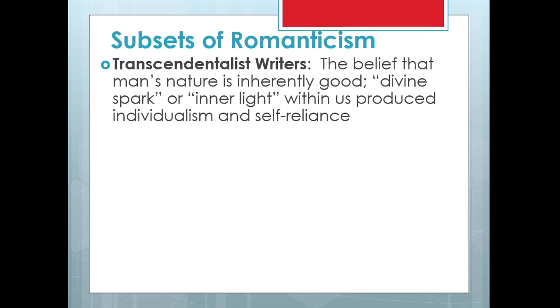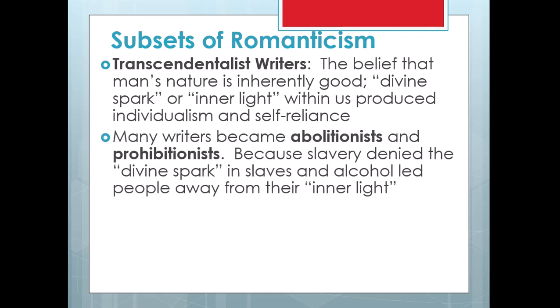The subsets of Romanticism: Transcendentalist writers have a belief that man's nature is inherently good, that all people have within them a divine spark or an inner light that produces individualism, and therefore we should be self-reliant. Many of these writers became abolitionists and prohibitionists because slavery denied the divine spark in slaves. They said these are people, many of whom have become people of faith, who taught themselves how to write, who've written slave narratives describing their experiences and their quest for freedom — and slavery is denying this in people, therefore it's a bad institution that we should abolish.